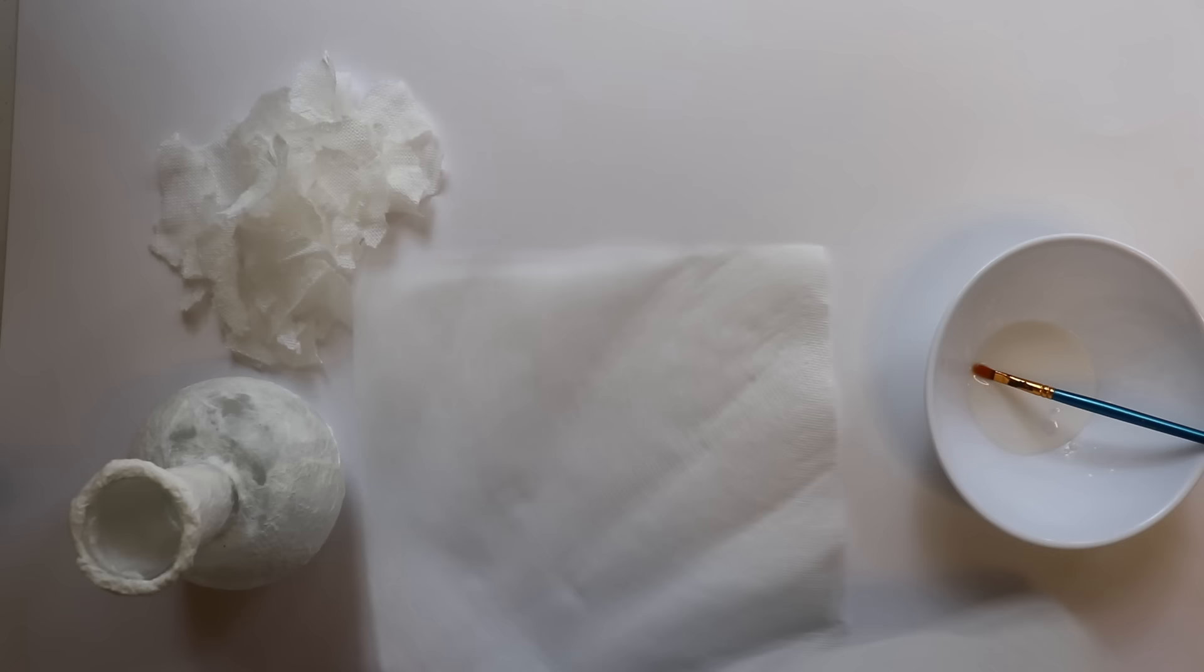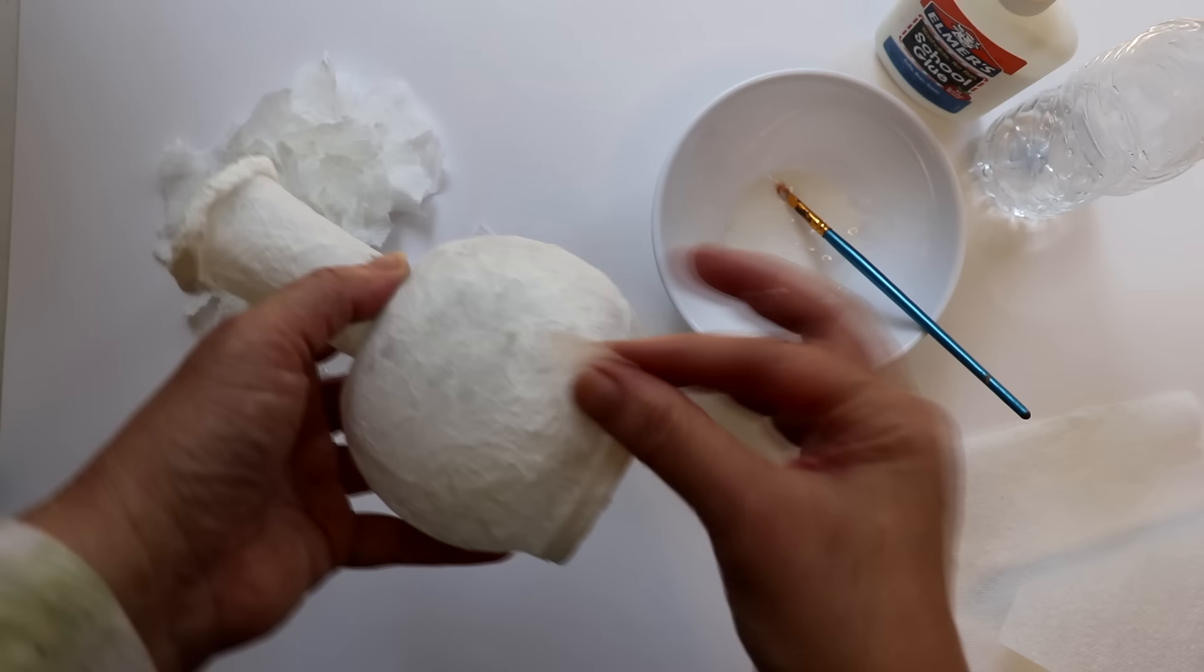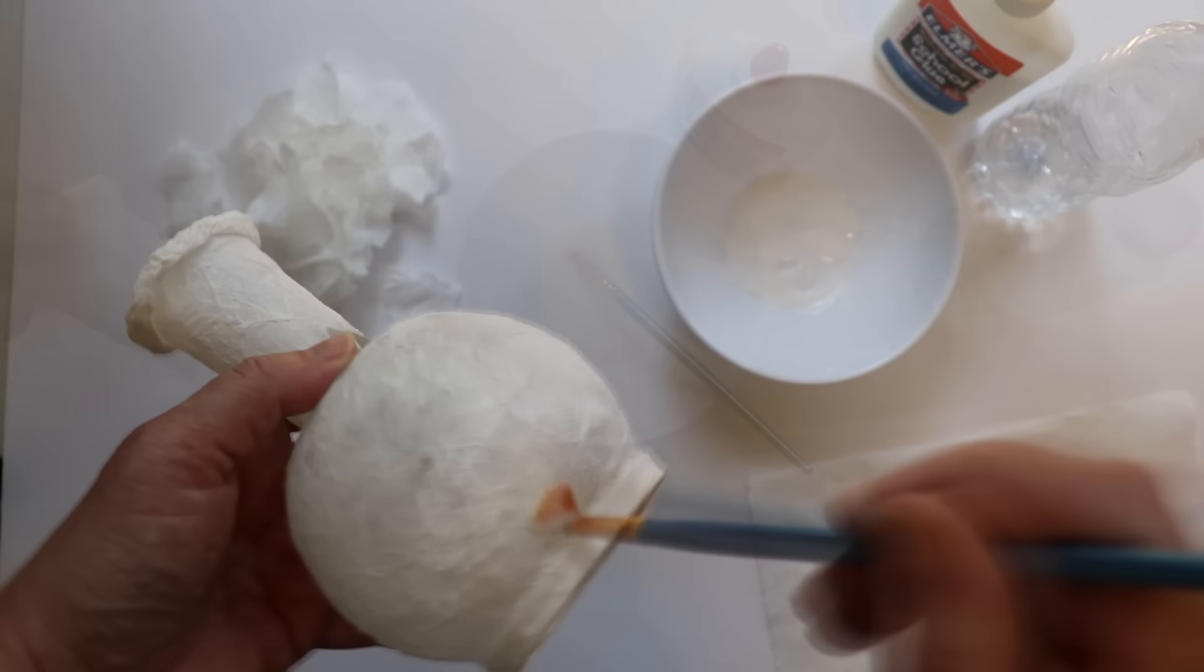I applied the pieces in the same way, adding a little glue mix to the surface, then patting a piece of the paper towel on top and adding more glue mix on top of that. And then once all of the paper towel pieces were applied, I set the piece aside to dry.